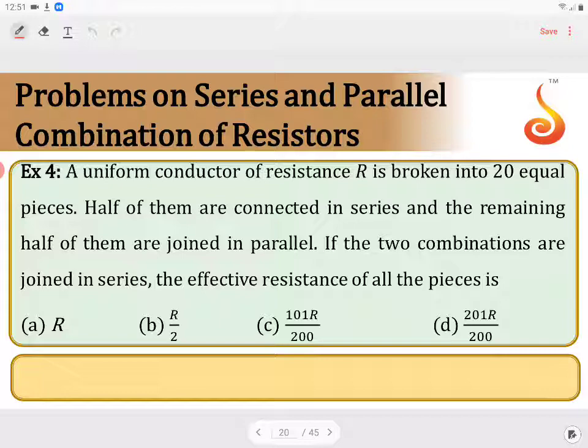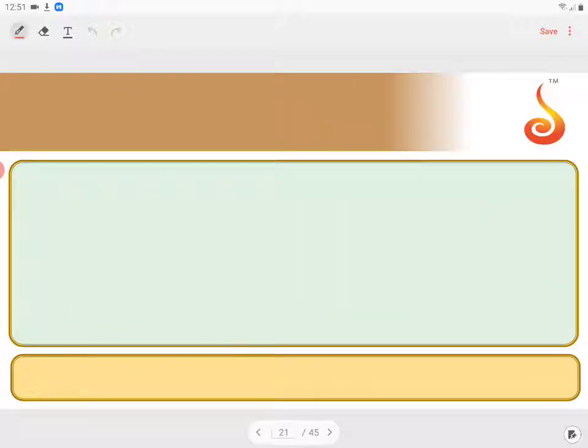So when you cut or break the entire wire into 20 equal pieces, each equal piece will get a resistance of R by 20. The resistance of each piece is R by 20.